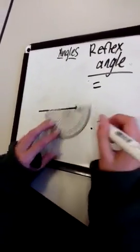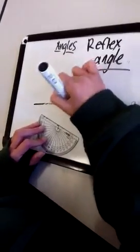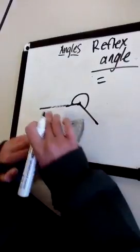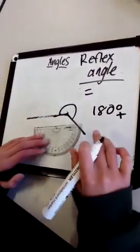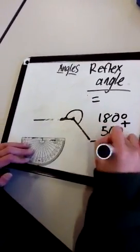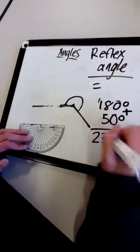Then just join the dots like this and put everything there. If you don't know what the degrees are, this is 180 degrees plus this which is 50 degrees, and just add them together which is 230 degrees.